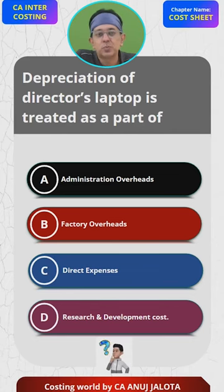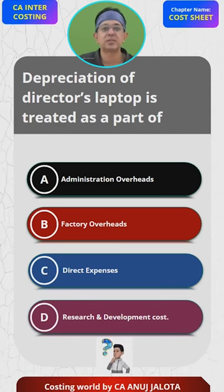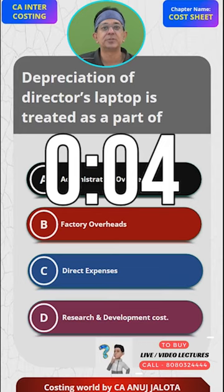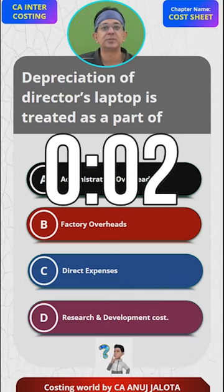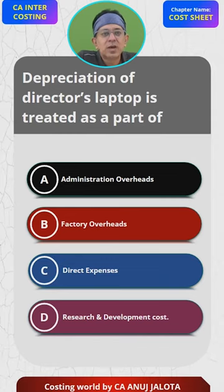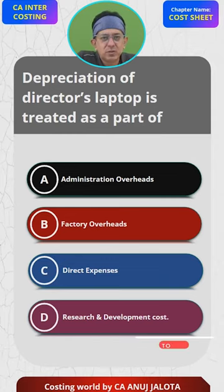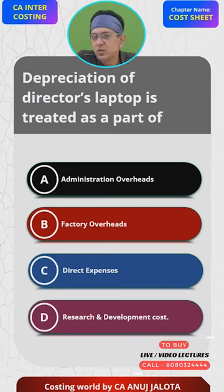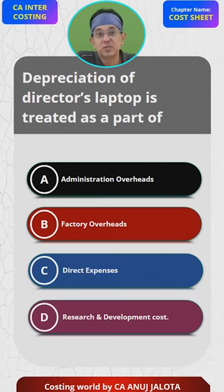Think — the answer is going to be super easy. Please comment before I say the answer. Try to think: is a director going to be in the factory? Obviously not. So not factory overheads. Direct expenses are those expenses which are related to production.